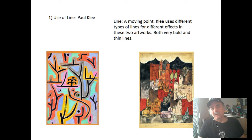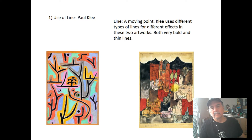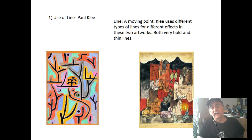The movement of these lines creates the interest, along with the colors he uses. The artwork on the right has a lot of very fine lines that he's chosen to create the sense of a town — part of the town is on a hill with more hills in the background. He varied the colors, and where the lines connect they also create shapes.